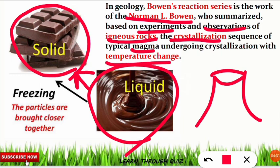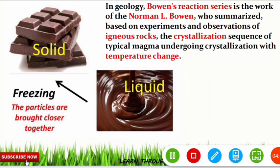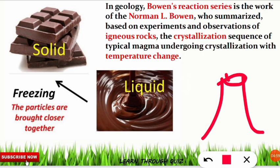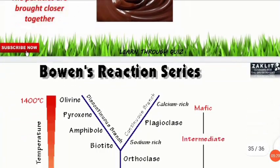When the temperature of magma decreases, it slowly cools down and turns from a liquid form into solid structures, giving rise to different kinds of minerals. Different minerals form at different temperatures as the temperature decreases. As magma comes outside the volcano the temperature decreases, it solidifies into a mineral, and as temperature drops further, it changes into another kind of mineral. This series was given by Norman L. Bowen and is known as Bowen's reaction series.